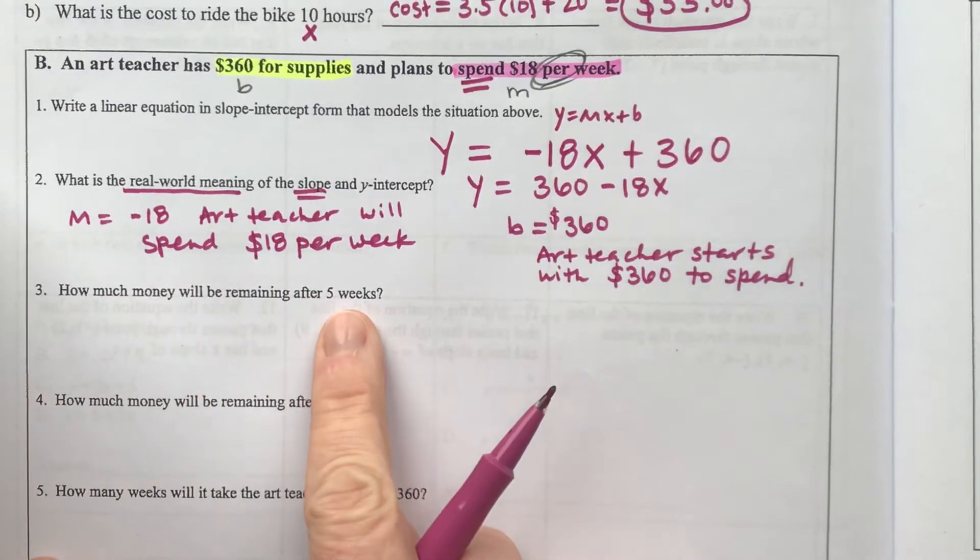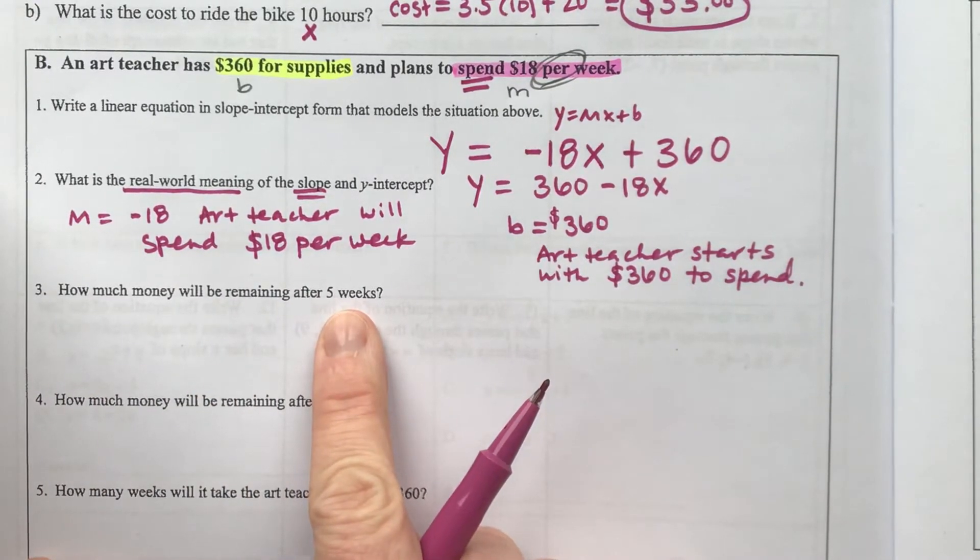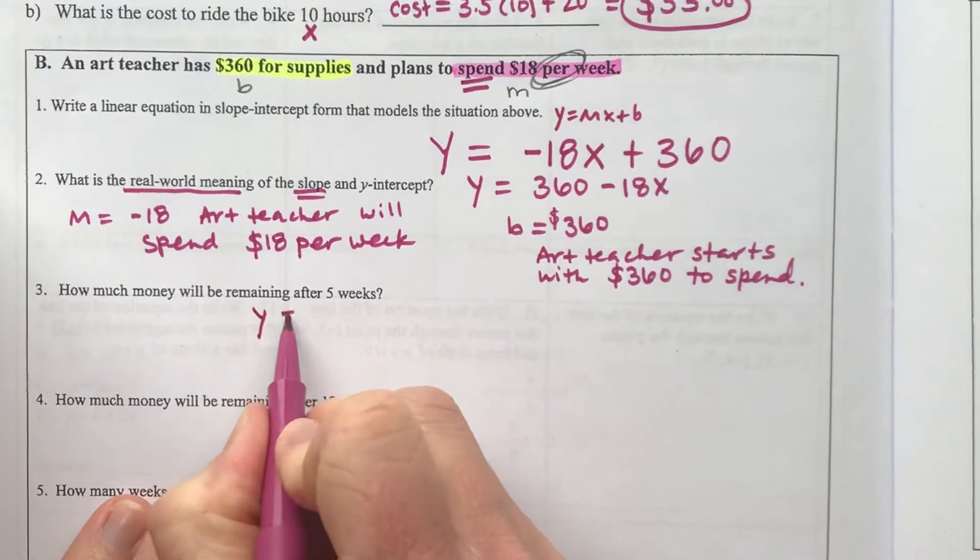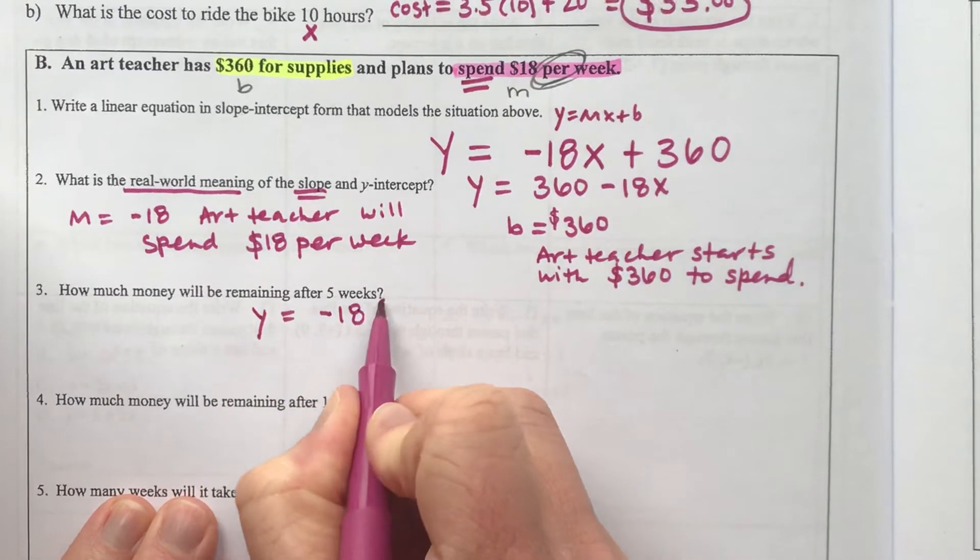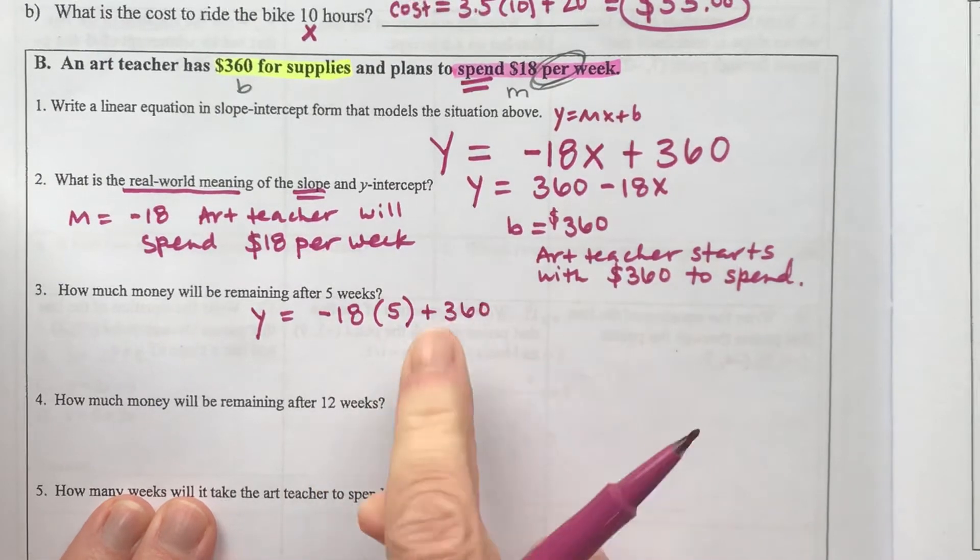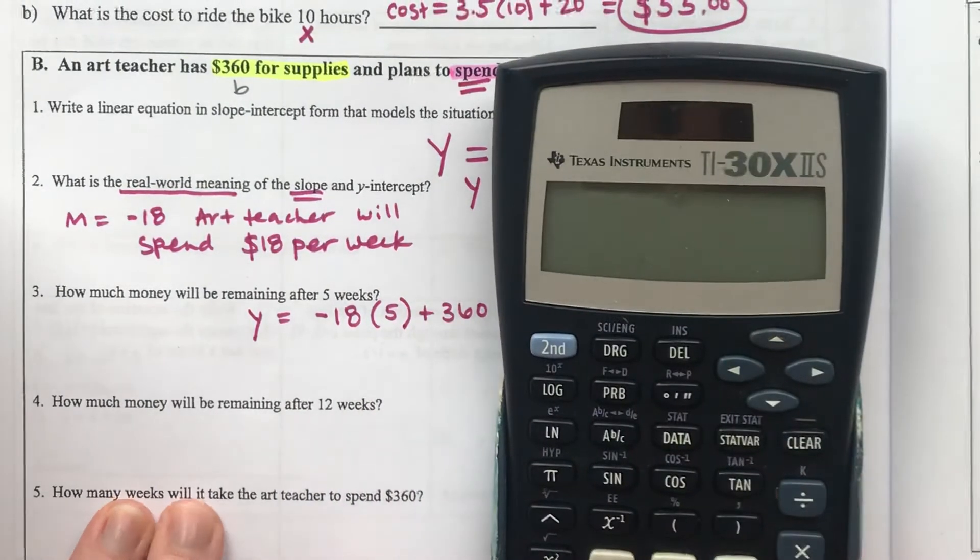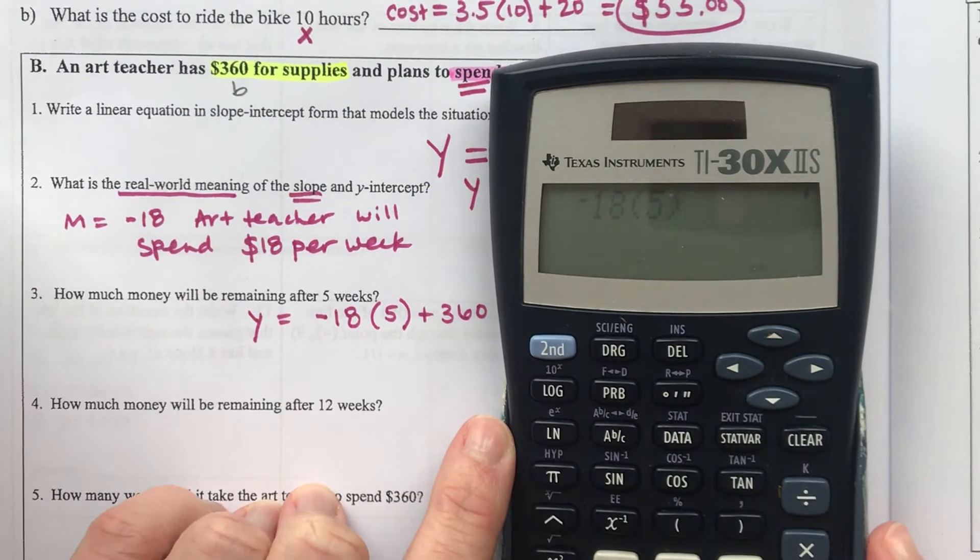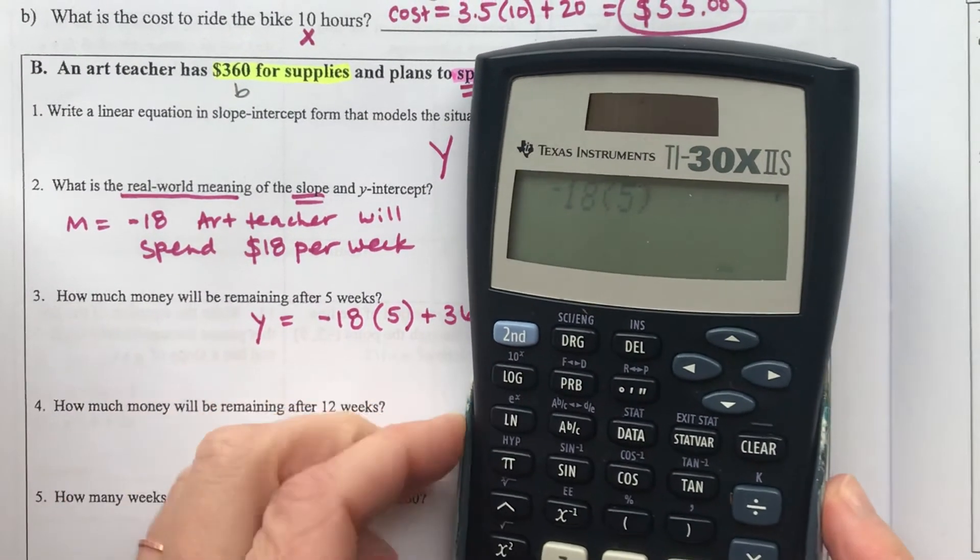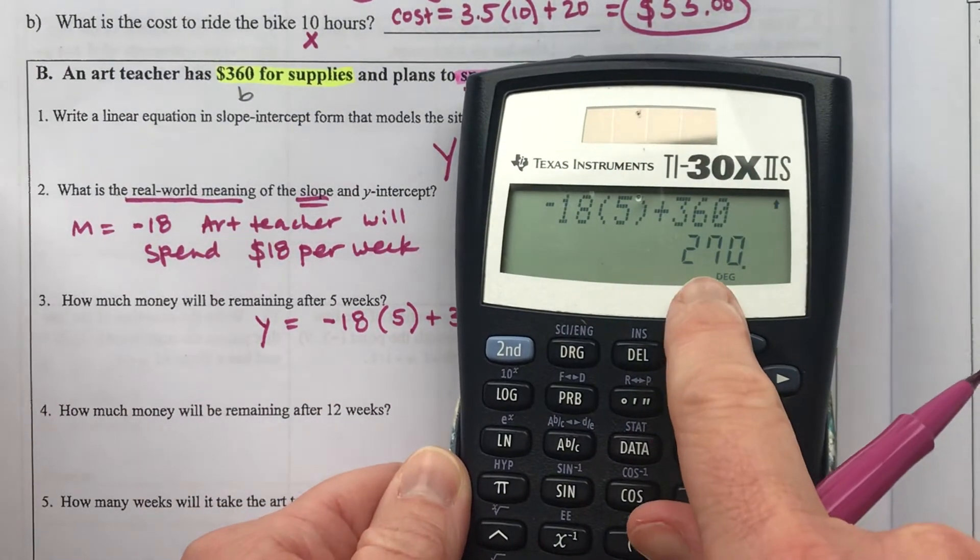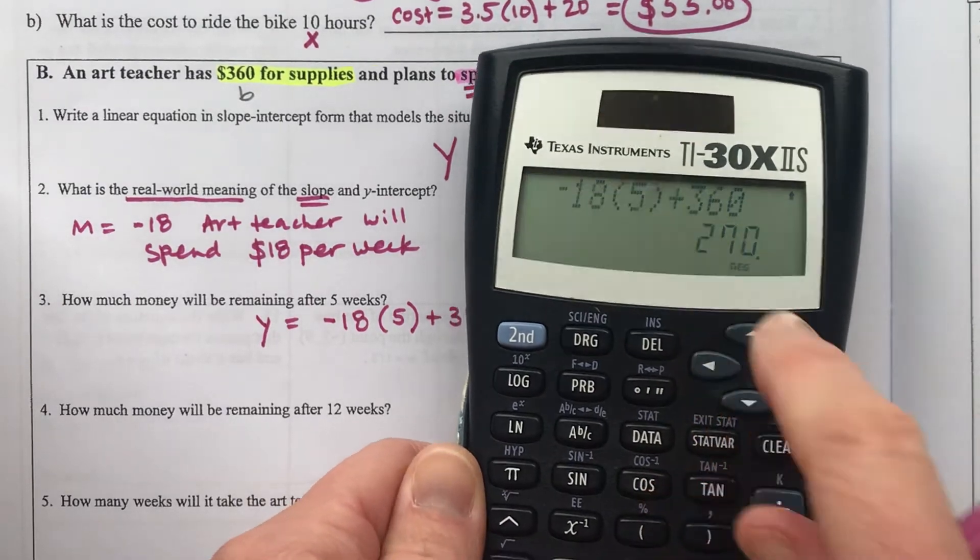The next question asks how much money will be left after 5 weeks. We plug 5 into our function: y = -18(5) + 360. Typing this into the calculator, negative 18 times 5 plus 360 equals $270 remaining after 5 weeks.